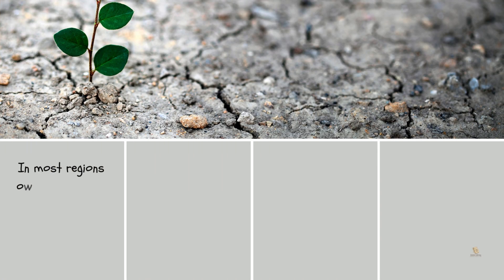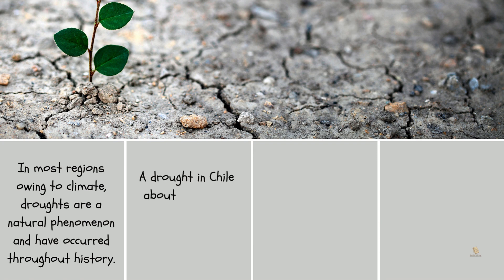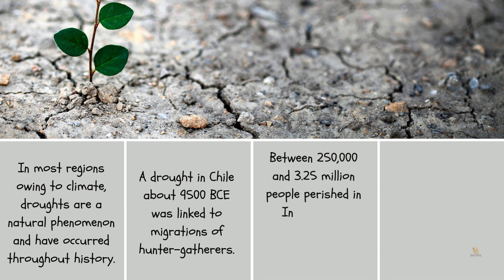In most regions, owing to climate, droughts are a natural phenomenon and have occurred throughout history. A drought in Chile about 9,500 BCE was linked to migrations of hunter-gatherers. Between 250,000 and 3.25 million people perished in India during another previous drought around 1900.